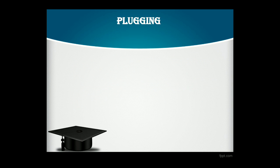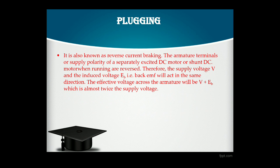Plugging is also known as reverse current braking. The armature terminals or supply polarity of a separately excited or shunt DC motor are reversed while it is running. Therefore, the supply voltage V and the back EMF E_B act in the same direction. According to KVL, the effective voltage across the armature becomes V plus E_B, which is almost twice the supply voltage.